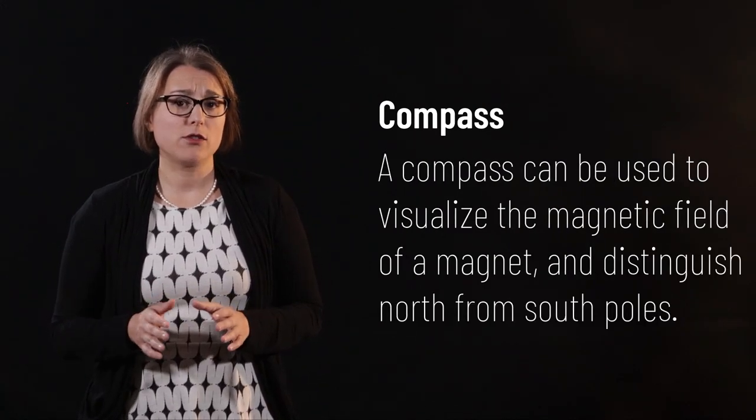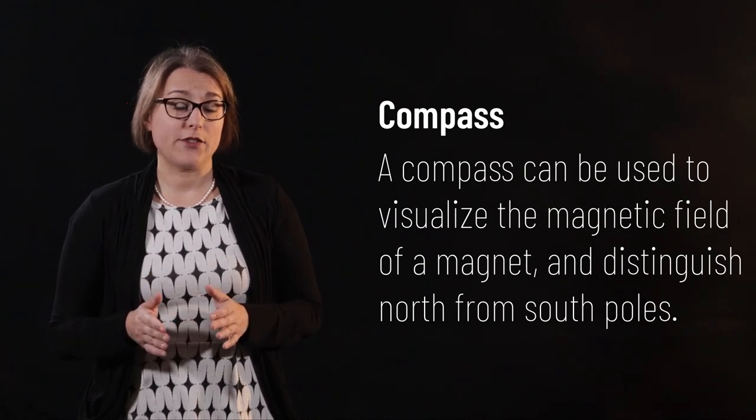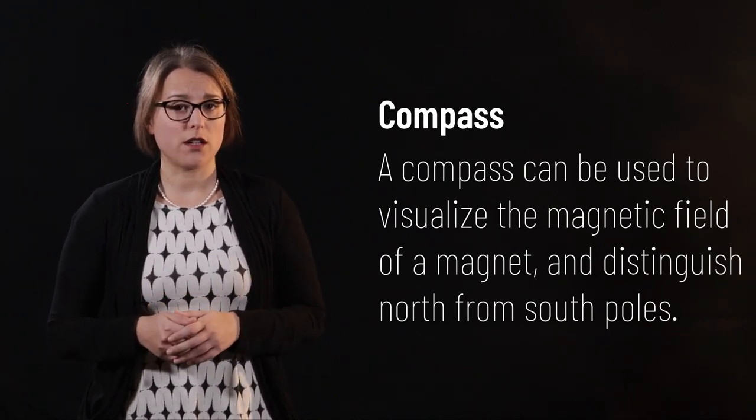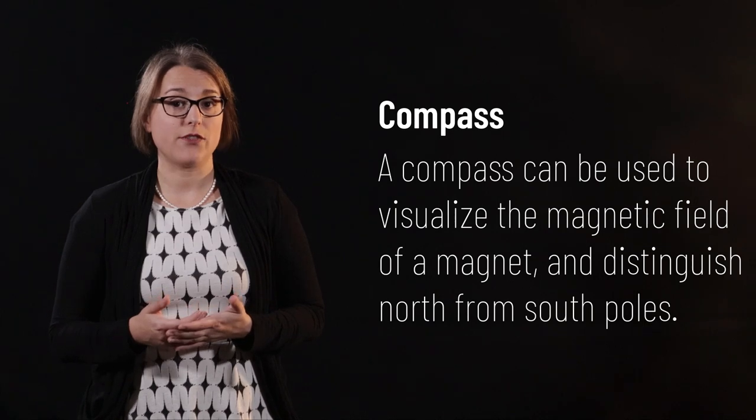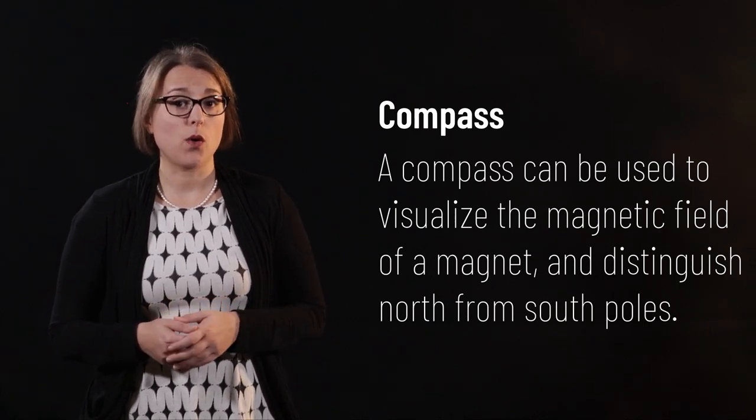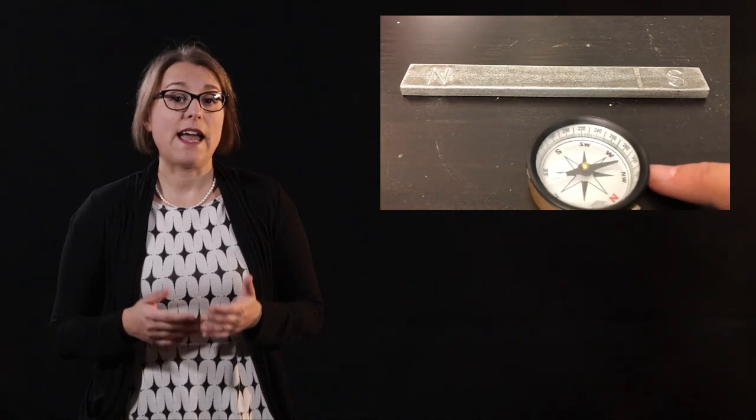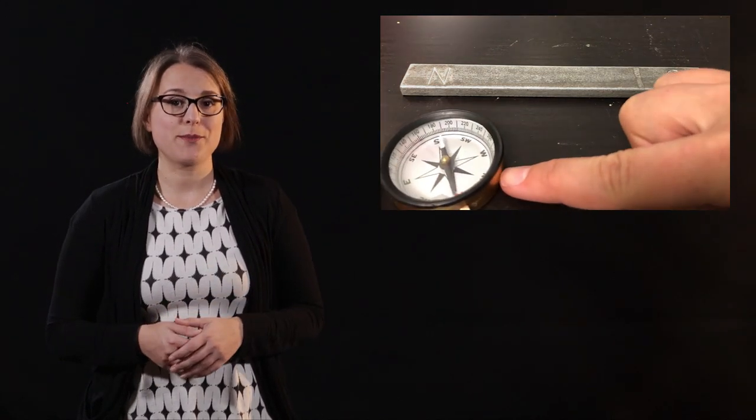When a compass is held close to a magnet, the magnetic field of the magnet becomes strong enough to overcome the Earth's magnetic field, and the compass can be used to point to the north pole. We can see how the alignment of the compass changes as we move the compass around a bar magnet.